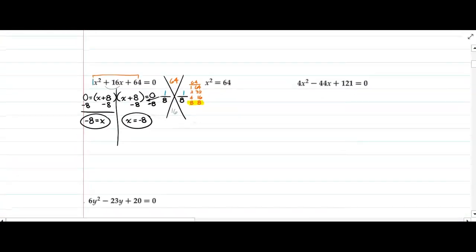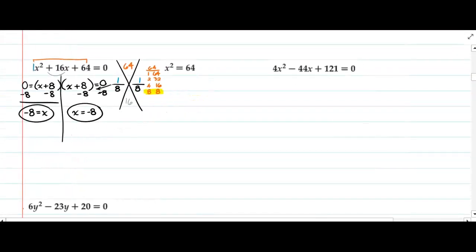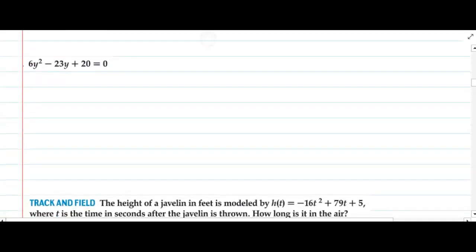When you're solving by factoring, you simply factor what you have before you and set each factor equal to 0 and solve.